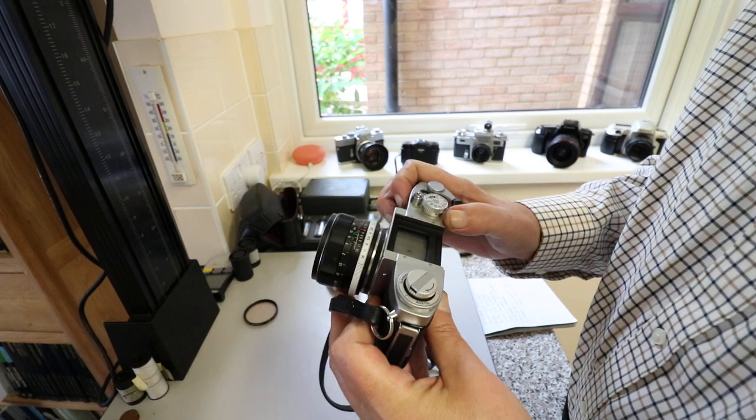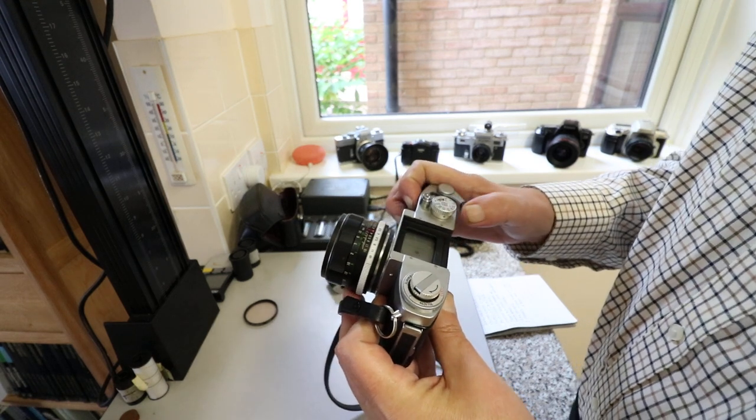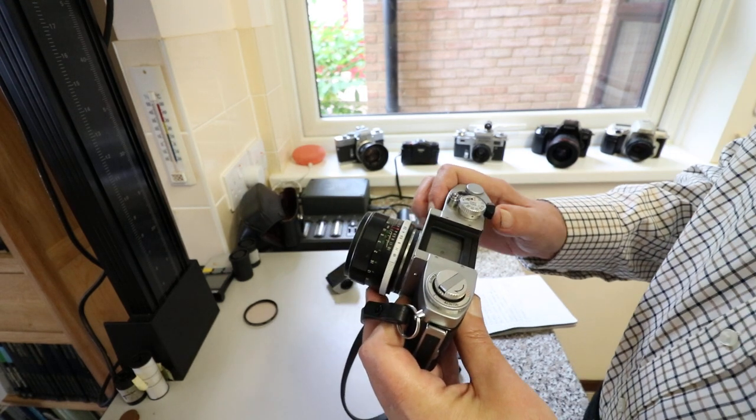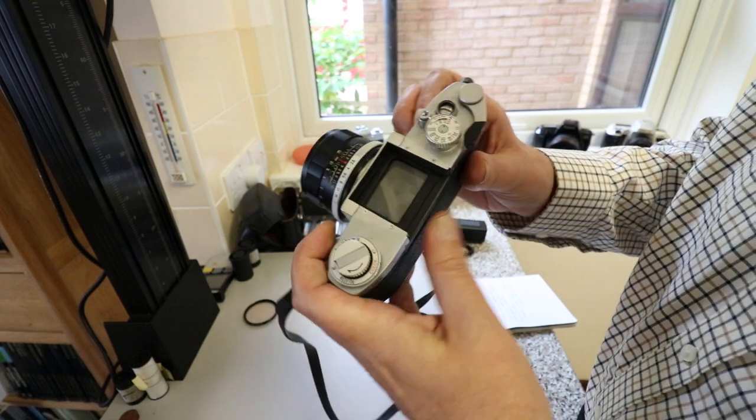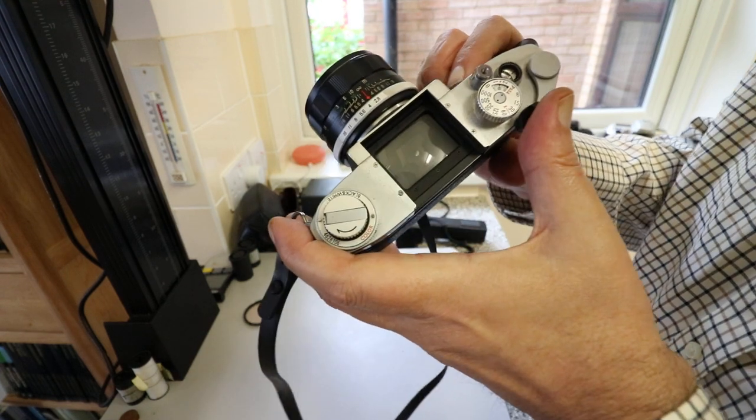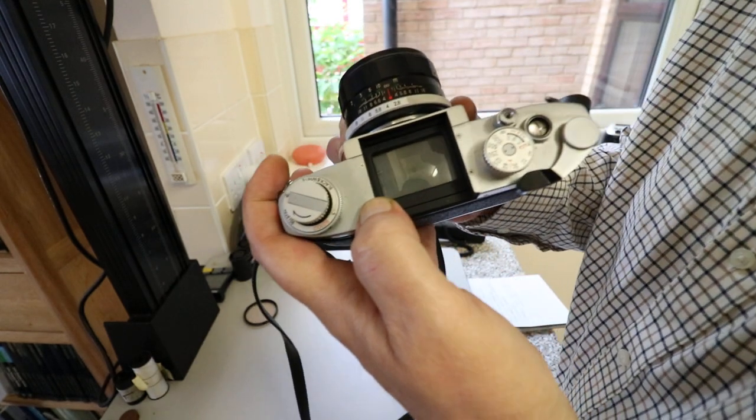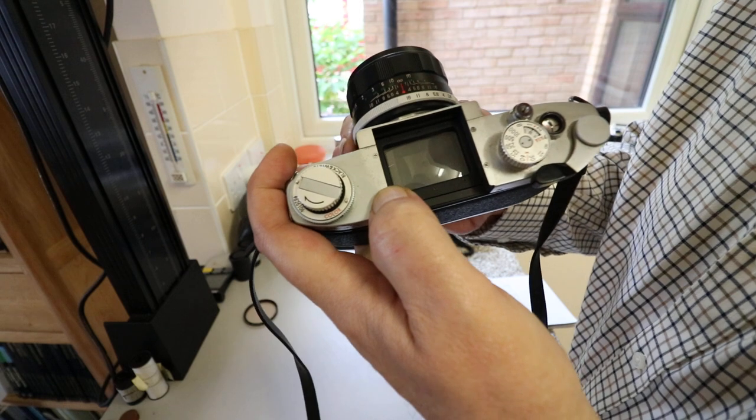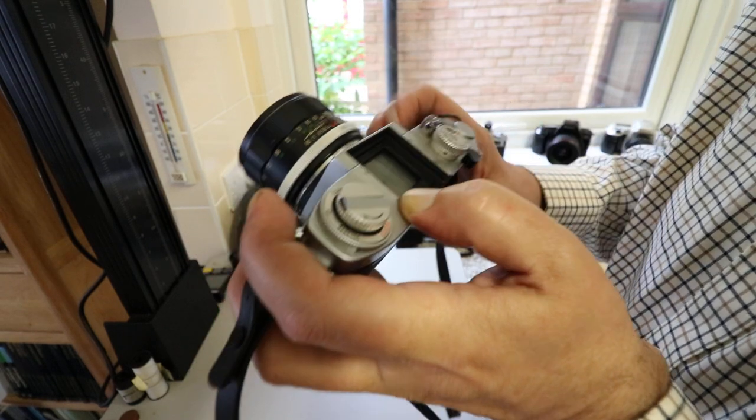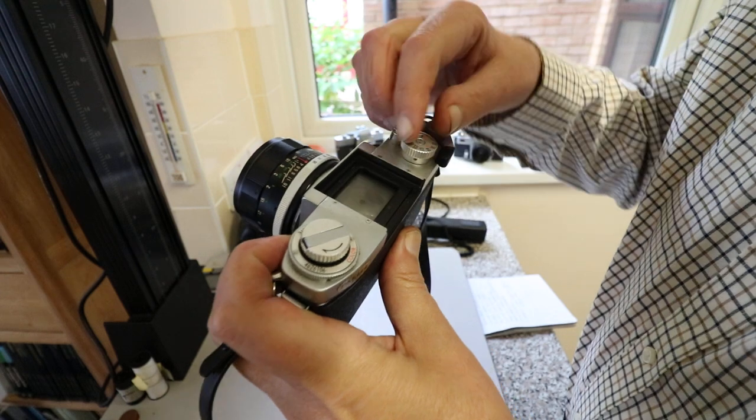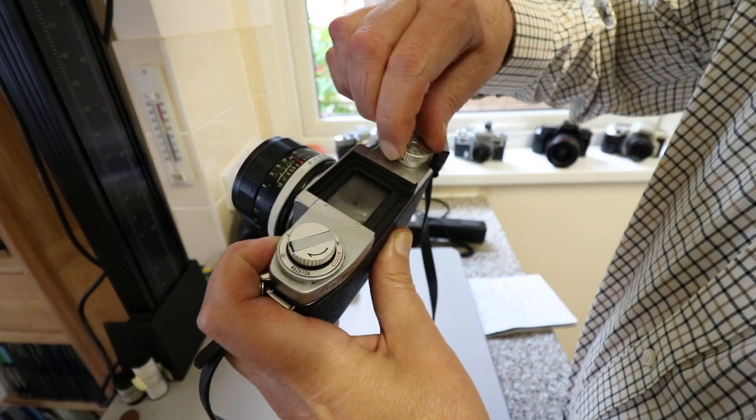The metering turns on with the film advance, and you can see the needle pointing up at the top. I'll change the aperture, and the shutter speed is way too low. There we go, the needle's coming down.